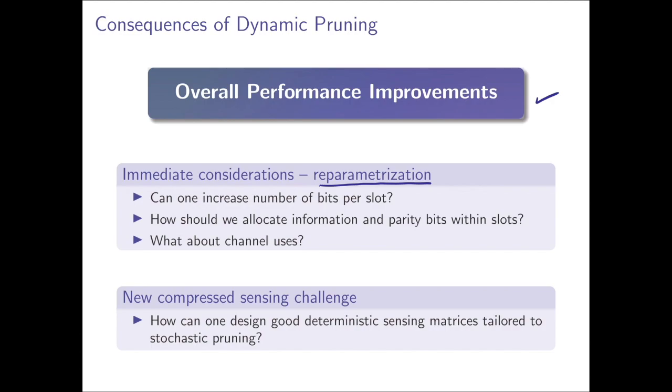So one question is, how can we allocate information in parity bits differently, knowing that we'll perform column pruning with the matrix A? Another interesting question, and that's one that's largely beyond coded compressed sensing, is how can one design good matrices for compressed sensing, knowing that they will be pruned dynamically? This seems to be a problem in compressed sensing that has not been looked at, and so maybe it's an opportunity for new analysis.